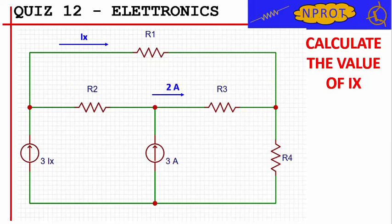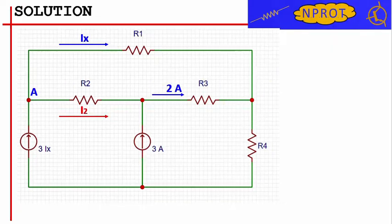To solve the exercise, let's focus on node A of the circuit and apply Kirchhoff's Law of Currents to that node. We recall that this law establishes that the sum of the currents entering a node must be equal to the sum of the currents exiting the same node. In the case of node A, we have an incoming current equal to 3 times Ix generated by the current generator on the left.